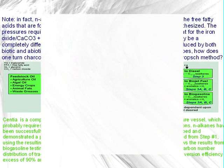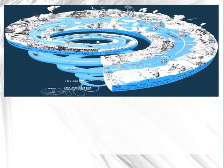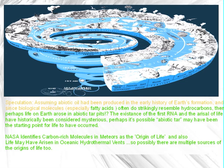Speculation: assuming abiotic oil had been produced in the early history of Earth's formation, and since biological molecules — especially fatty acids — often strikingly resemble hydrocarbons, perhaps life on Earth arose in abiotic tar pits. The existence of the first RNA and the aerosol of life have historically been considered mysterious. Perhaps abiotic tar may have been the starting point for life. NASA identifies carbon-rich molecules in meteors as the origin of life, and life may have also arisen in oceanic hydrothermal vents — so possibly there are multiple sources for the origins of life.